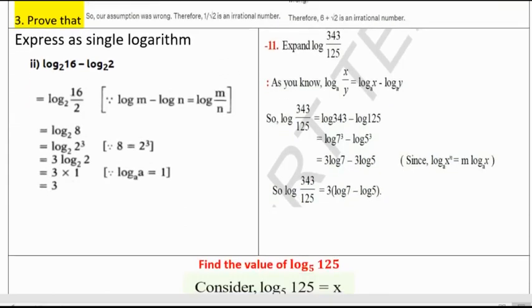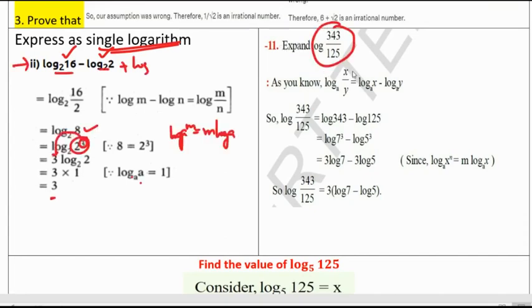Express as single logarithm. In the question they have given 2 logarithms and asking us to express in single logarithm. The other way of asking is 1 logarithm in expansion form. Log 343 can be expressed as log 3 into log 7 minus log 5. Either way they may ask.